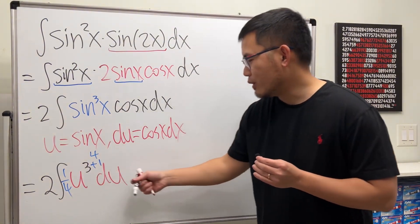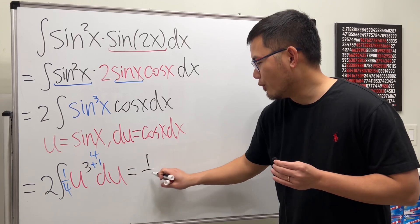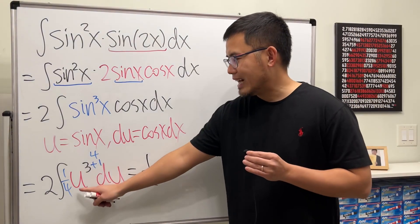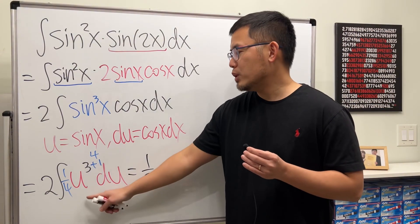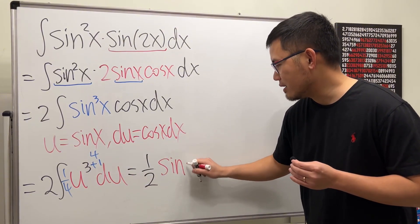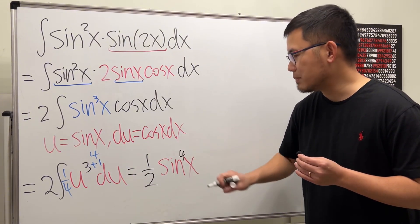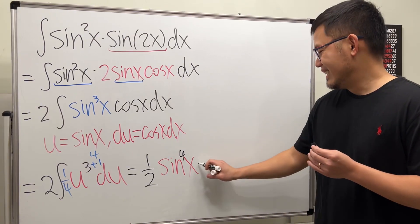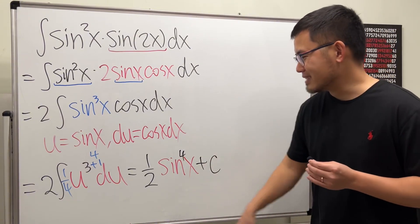So 2 times 1 over 4, we get 1 over 2, and then we have u to the fourth power. And we know u is sine x, so we have sine x to the fourth power. All done. Put plus C right here.